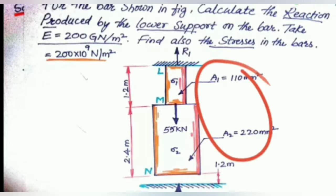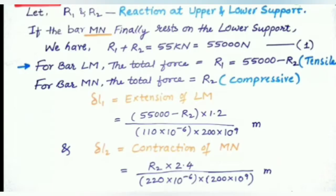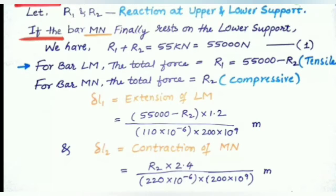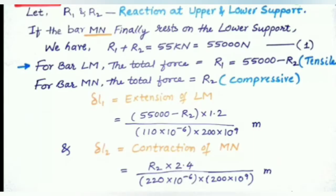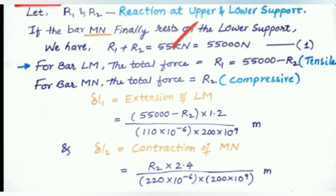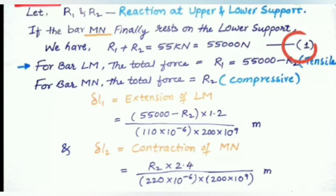Once you have converted all units to standard form, we go for the solution. Let R1 and R2 be the reactions at the lower and upper supports. From equilibrium, R1 plus R2 equals 55 kN, which is 55,000 N. Let this be equation one.